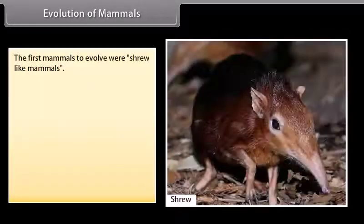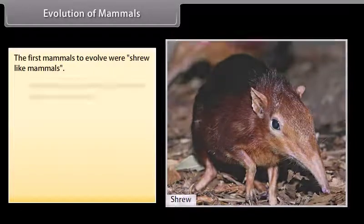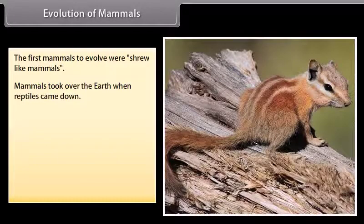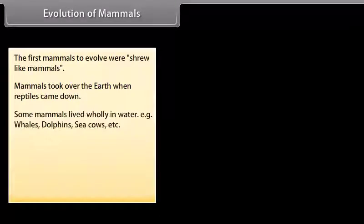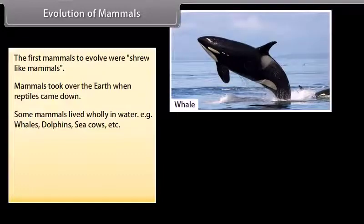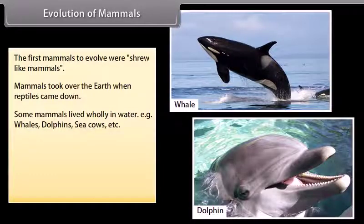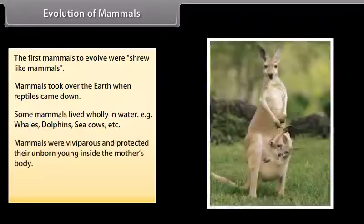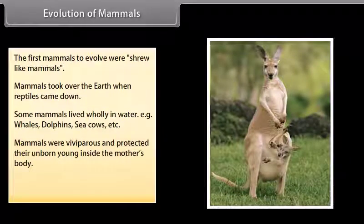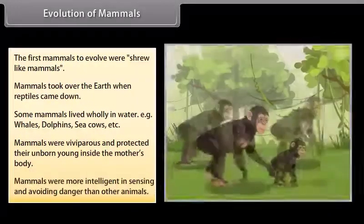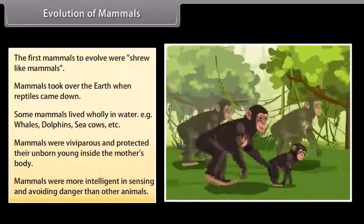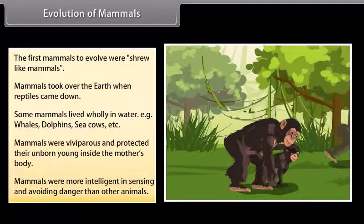The first mammals to evolve were shrew-like mammals. Mammals took over the earth when reptiles declined. Some mammals lived wholly in water — for example, whales, dolphins, and sea cows. Mammals were viviparous and protected their unborn young inside the mother's body. Mammals were also more intelligent in sensing and avoiding danger than other animals.